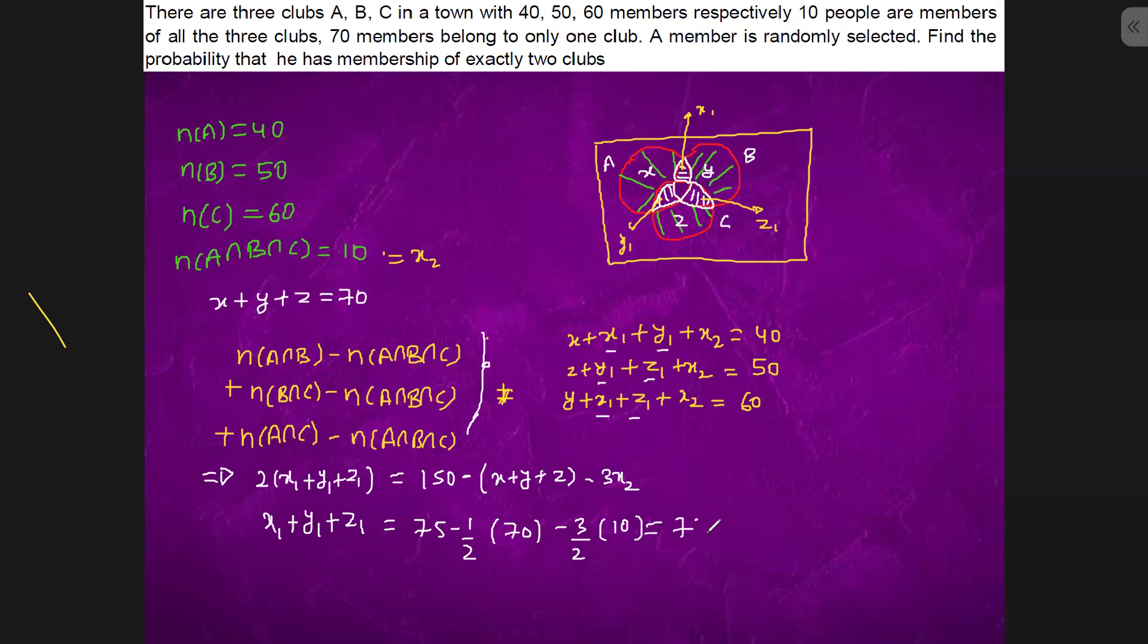So we have 75 minus 35 minus 5, so it is 25. So 25 is the answer. Hope you got the solution.